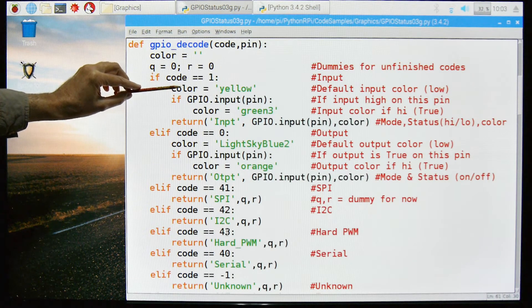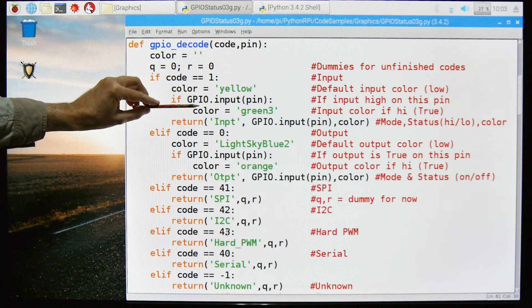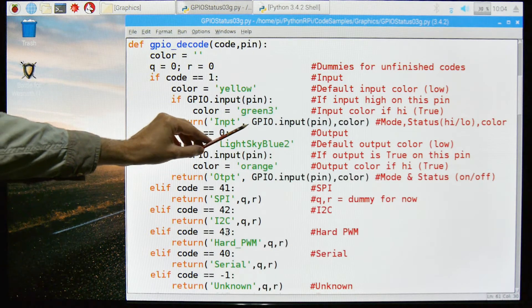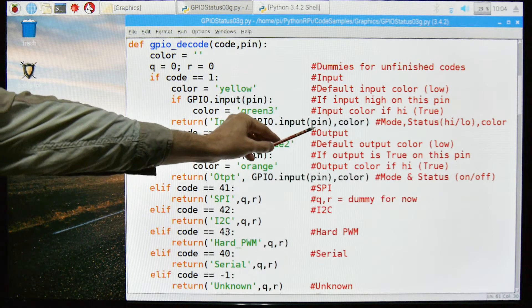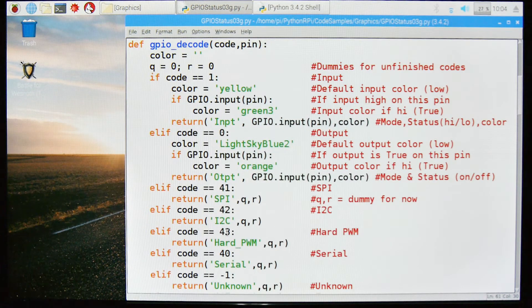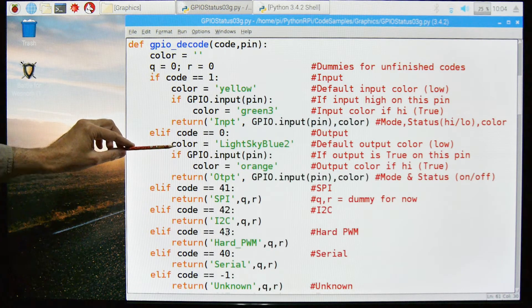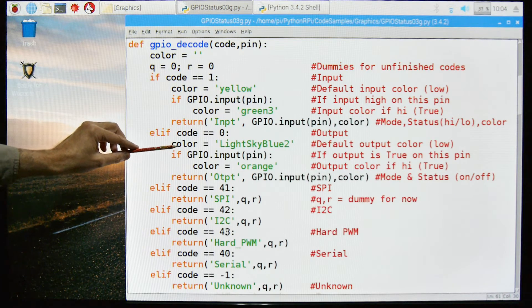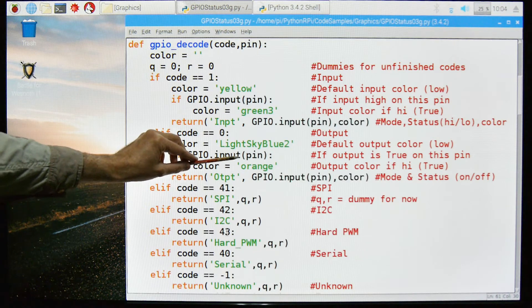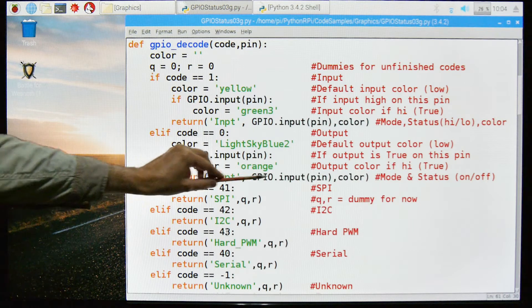So it shifts from yellow to green if there's an input on the PIN. And then I'm going to return the value of a text code and then the GPIO input of the PIN. So in other words, the value of it and then the color that I've just set up here. Otherwise, if the code is zero, then that means it's set to be an output PIN. And I set the color default to light sky blue too. If the PIN is high, if it's true, then I set the color to orange and then I return that.